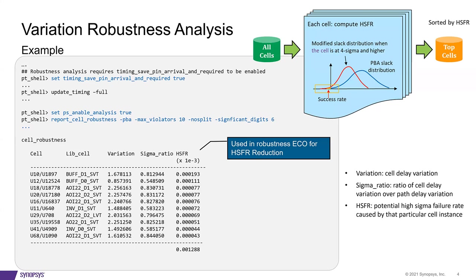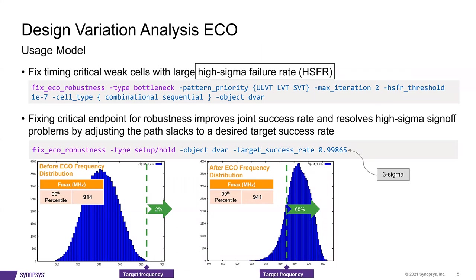And then, let's move on to focusing on how to fix these top cells with largest HSFR using fixed ECO robustness, as shown in the example. Notice in the first bullet here, we use a command called fixed ECO robustness type bottleneck to perform ECO on such weak cells. Here, ECO performs a VT swap based on user-specified pattern priority. The pattern priority is simply the lowest to highest variation of VT class devices. For example, ULVT comes first, followed by LVT, and then by SVT. The prime shield ECO also performs cell sizing. Both cell sizing and VT swap can be used concurrently or even separately.